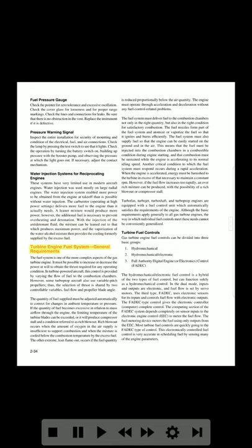Turbine engine fuel system — general requirements: The fuel system is one of the more complex aspects of the gas turbine engine. It must be possible to increase or decrease power at will to obtain the thrust required for any operating condition. In turbine-powered aircraft, this control is provided by varying the flow of fuel to the combustion chambers. Some turboprop aircraft also use variable pitch propellers, so the selection of thrust is shared by two controllable variables: fuel flow and propeller blade angle.